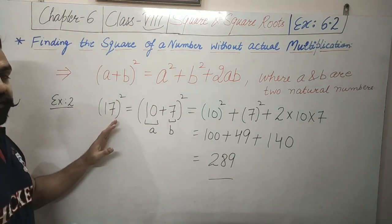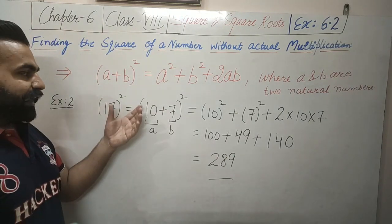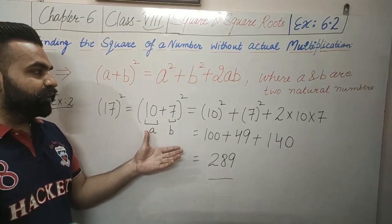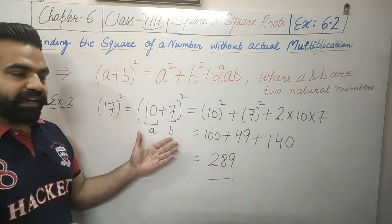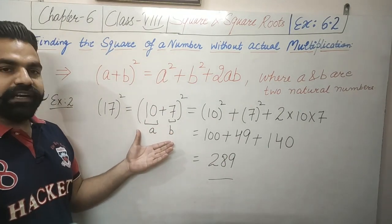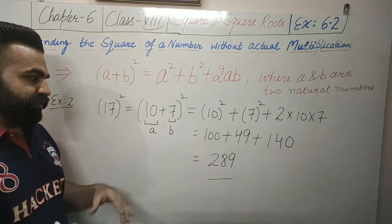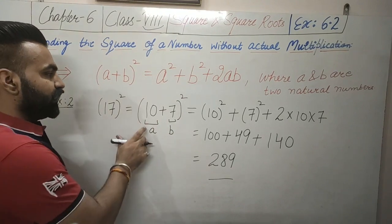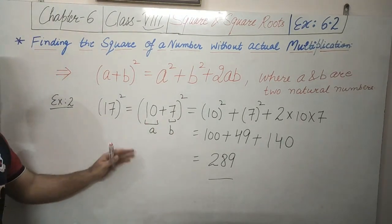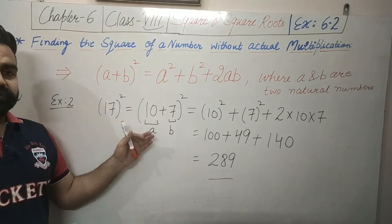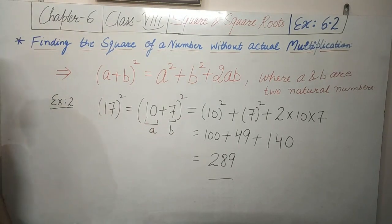So in this form we can calculate the square of any number — for example 95 as 90 plus 5 whole square, or 92 as 90 plus 2 whole square. By using this method we can calculate the square of any number.